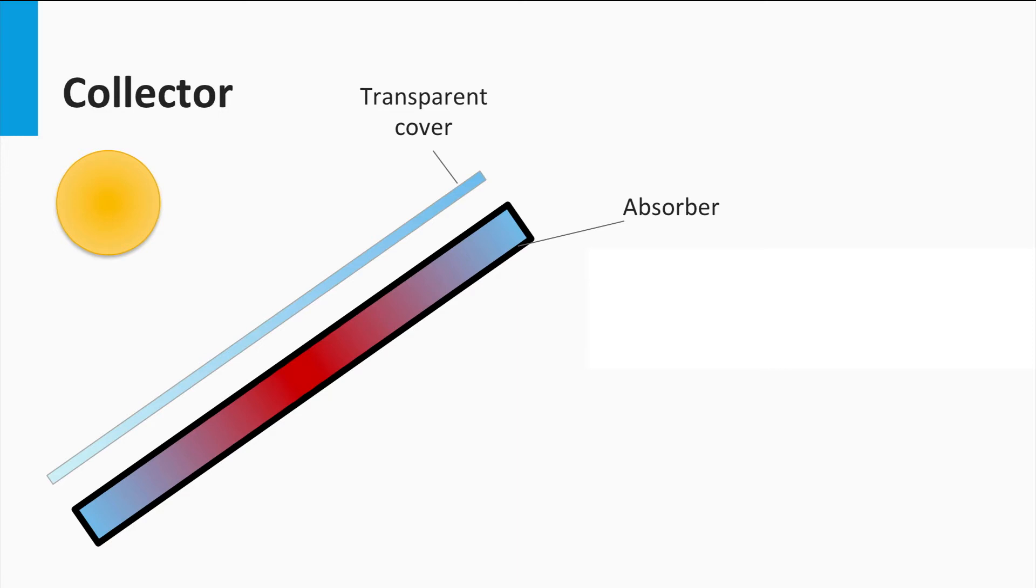The collector determines how much of the incident light is used. It usually consists of a black surface, called the absorber, and a transparent cover. The absorber is able to absorb most of the incident energy from the sun, through the transparent cover, represented as Q sun, raising its temperature and transferring that heat to a working fluid. Thus, the absorber can be cooled and the heat can be transferred elsewhere. Here the output energy moving with the working fluid is represented by Q-col.